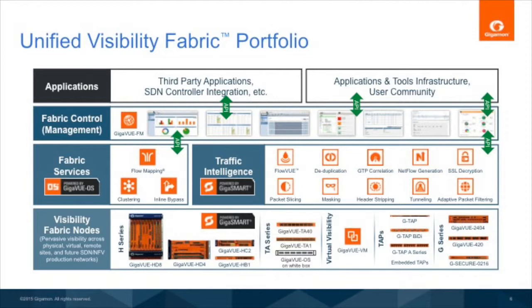Since September we have refreshed our portfolio and added more products. The visibility fabric nodes range from the high-end H series to the 1RU HP1 and HC2. We also introduced a white box appliance — a generic white box on which our GigaVUE OS can run using an ONI bootloader, providing the same traffic services, traffic filtering, and flow mapping that can be clustered into our highly intelligent nodes using our clustering technology. So traffic intelligence can be applied to any traffic coming out of the leaf.